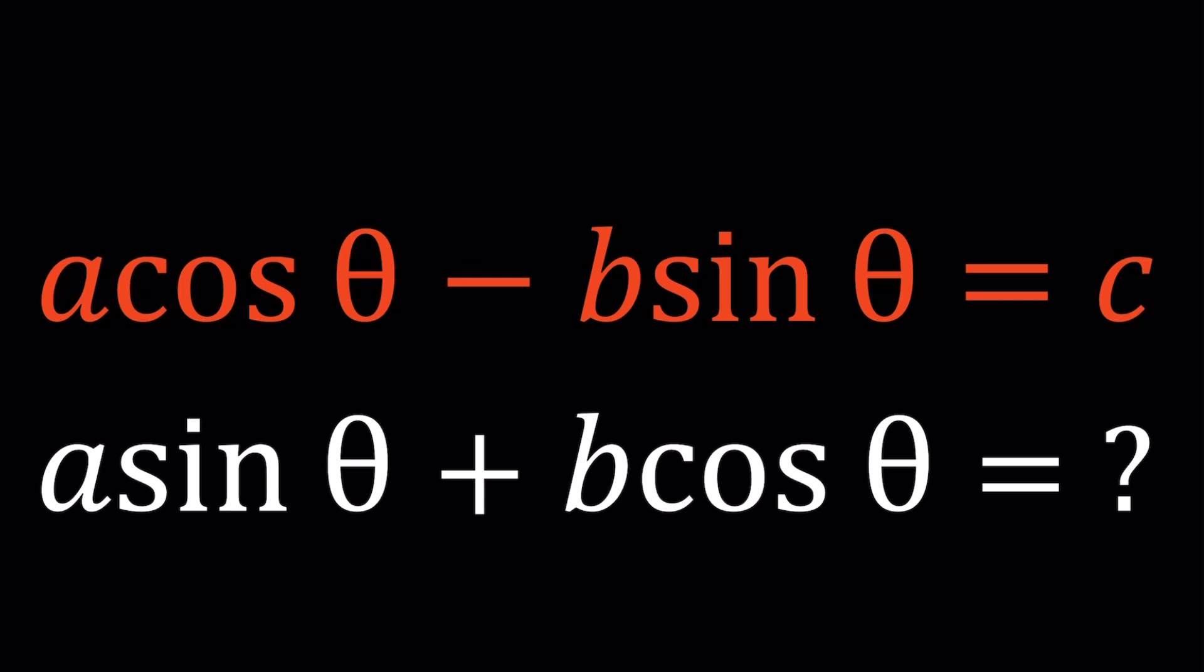And the answer is going to be in terms of A, B, and C. So we're going to find kind of like a parametric solution, which means that you can change the values of A, B, C. And every time you do, you're going to get a different problem.